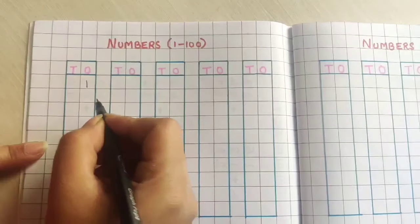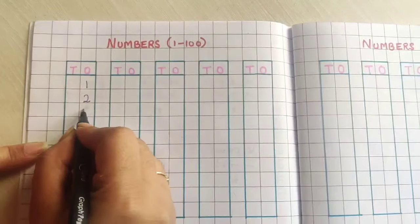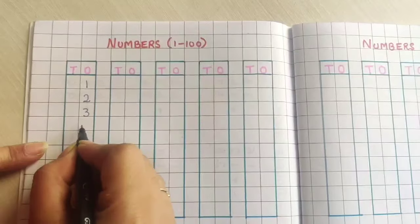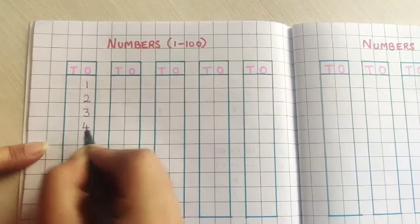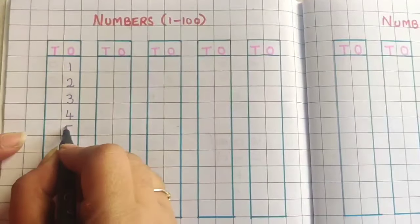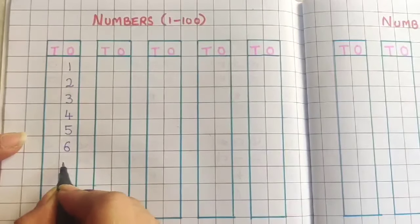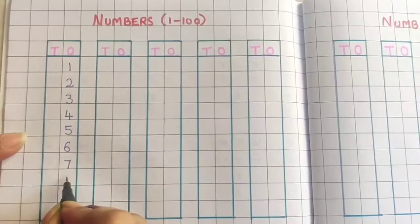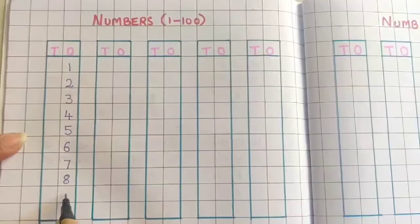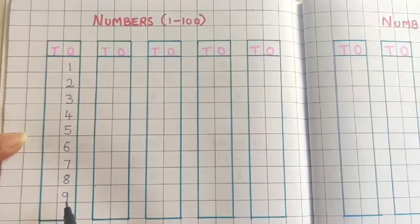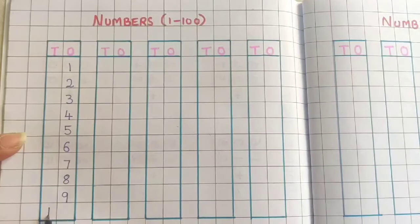1, 2, 3, 4, 5, 6, 7, 8, 9 and 10. It is a two digit number. So in the tens place I will write 1 and in the ones place 0.